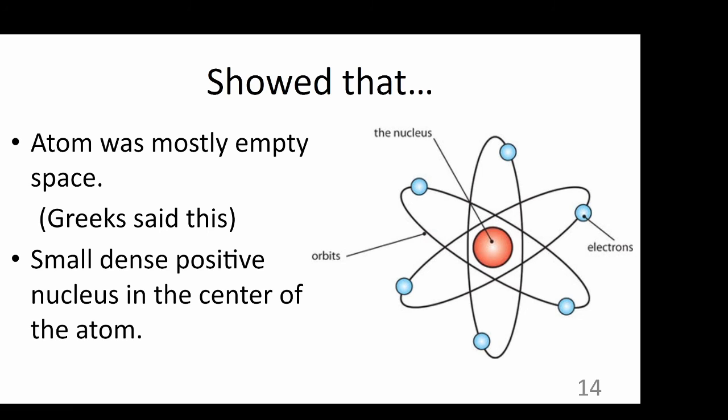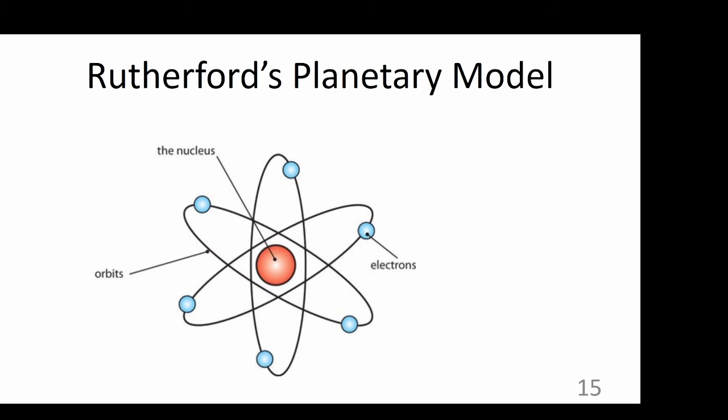If you want to explore this further, check out the Rutherford applet in the supporting materials. Rutherford's model is known as the planetary model, with electrons traveling in circular orbits around a positively charged nucleus. Although this model made several advancements from the plum pudding model, there was still much room for further development.